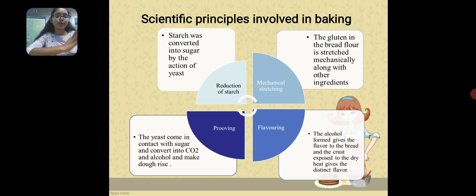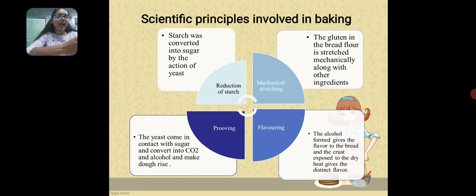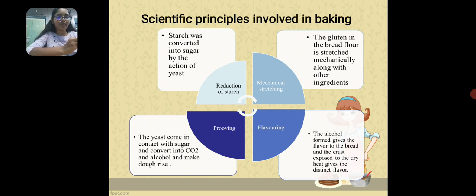The next principle is proving, which is done by the yeast which converts the sugar into carbon dioxide and alcohol, making the dough rise. The fourth principle is flavoring, which is given by the alcohol formed in the process of proving, giving a distinct flavor. The crust also gives a distinct flavor when it gets heated.